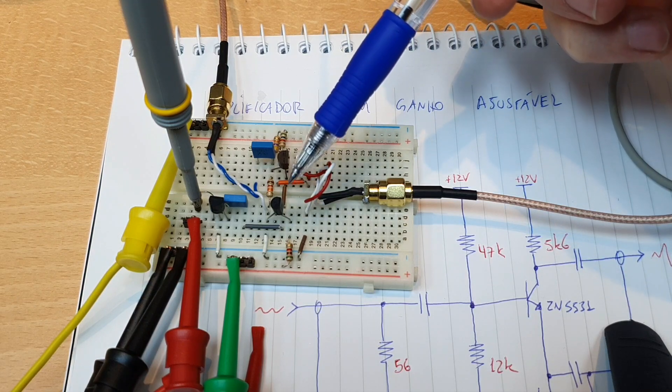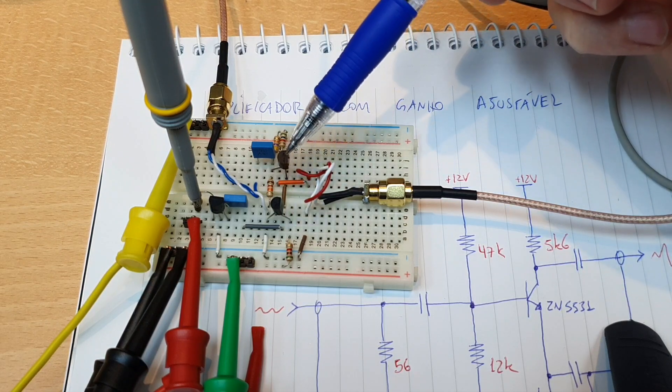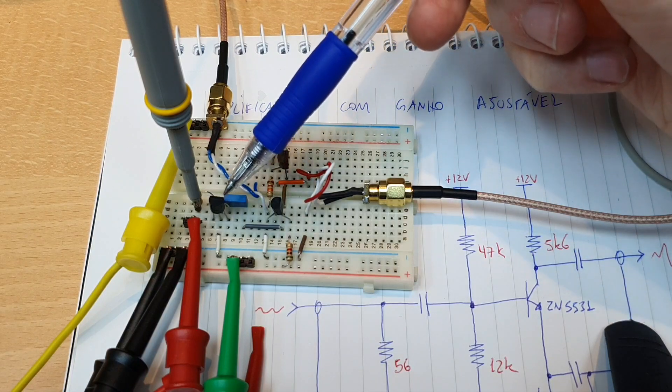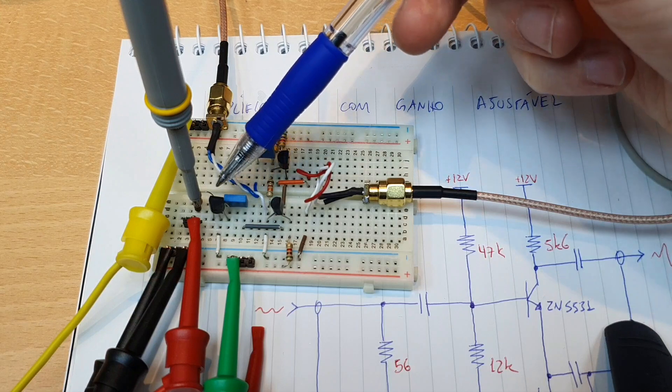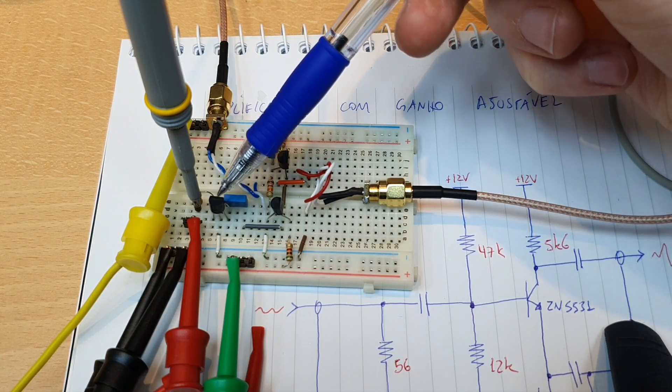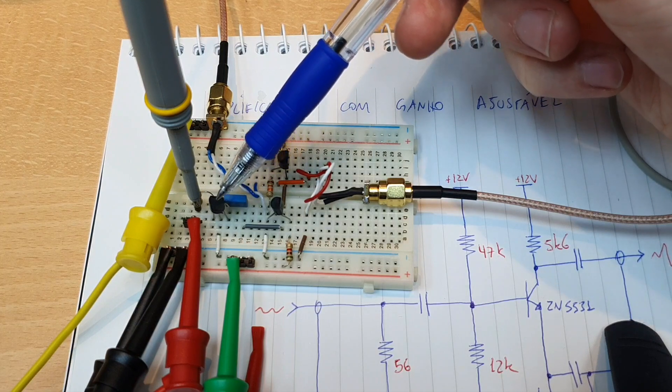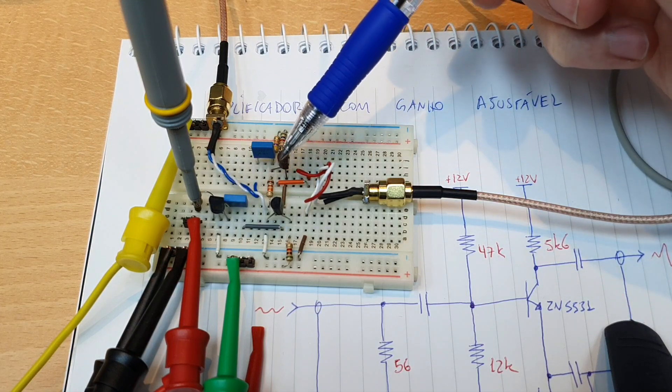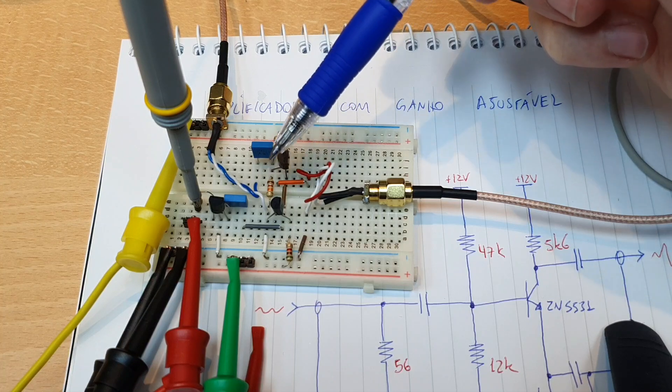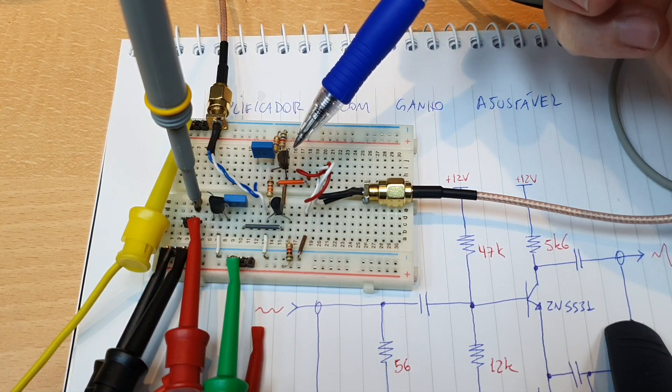To change the impedance of the emitter of the common emitter amplifier, the AC impedance, we are using a JFET transistor. So this JFET here works as a variable resistor and we can change the AC resistance seen by the emitter of the common emitter transistor. So we can control the gain of the amplifier.